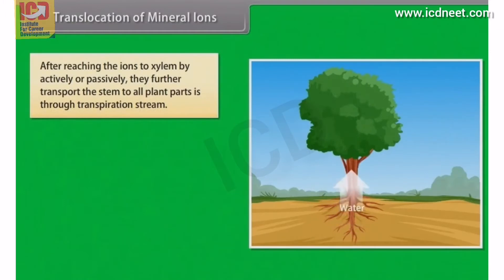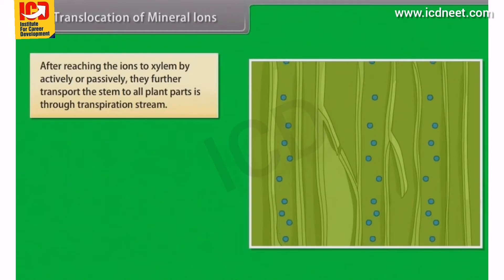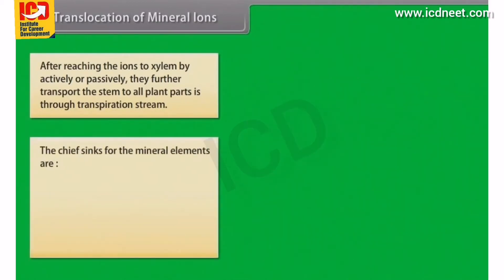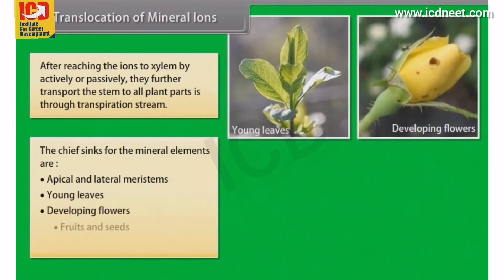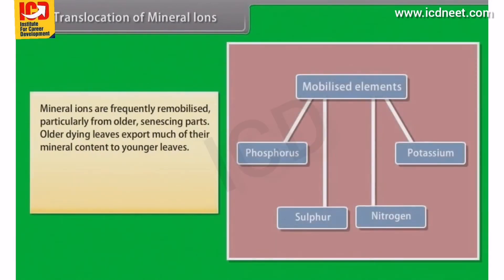Translocation of mineral ions. After the ions have reached the xylem through active or passive uptake, or a combination of the two, their further transport up the stem to all parts of the plant is through the transpiration stream. The chief sinks for the mineral elements are the growing regions of the plant, such as the apical and lateral meristems, young leaves, developing flowers.